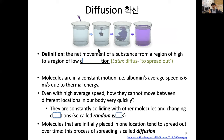The definition of diffusion is the net movement of a substance from a region of high to a region of low concentration. We know that molecules are in constant motion, and from a physical point of view, temperature is important — the molecules have thermal energy that causes them to move constantly as kinetic energy.